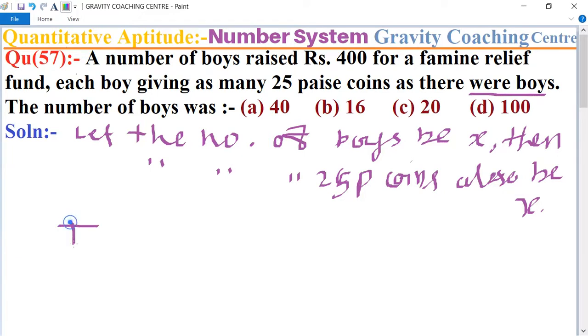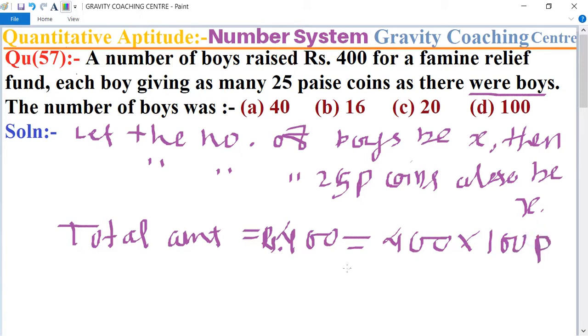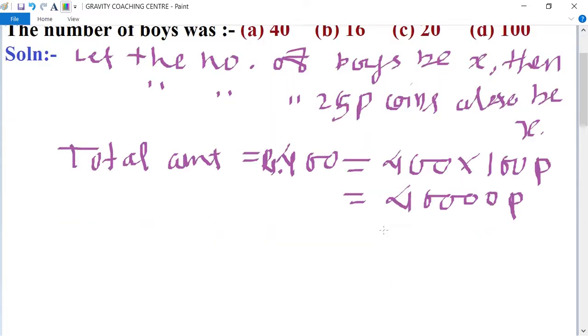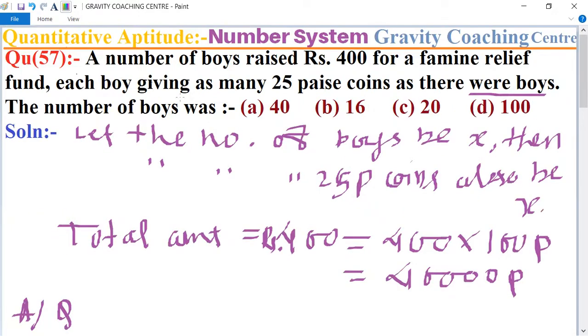Total amount collected was 400 rupees. Convert into paise, so it will become 400 × 100 paise, which is 40,000 paise.